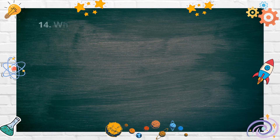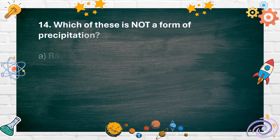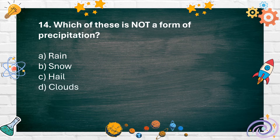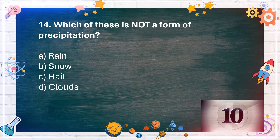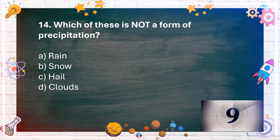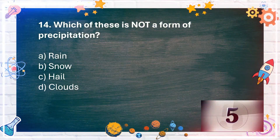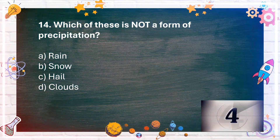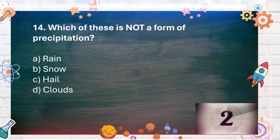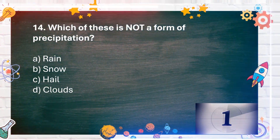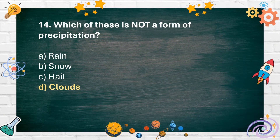Number 14. Which of these is not a form of precipitation? A. Rain. B. Snow. C. Hail. D. Clouds. The answer is D. Clouds.